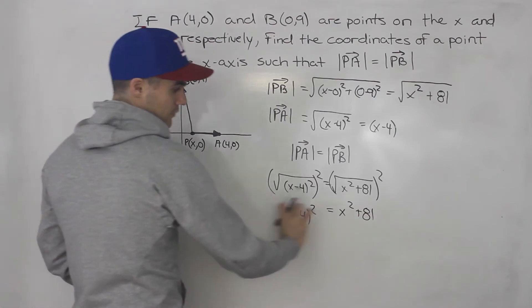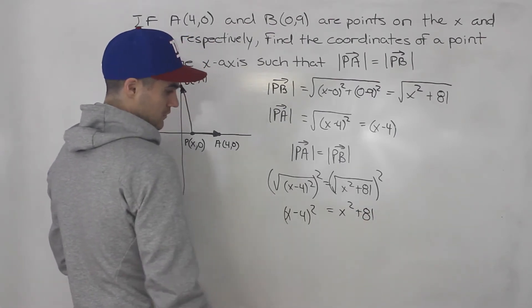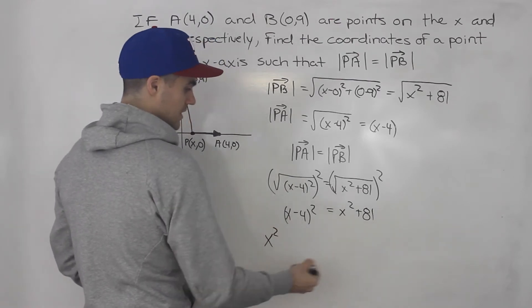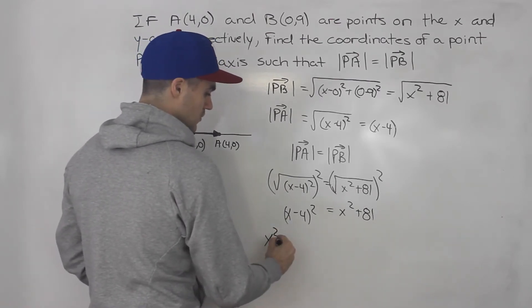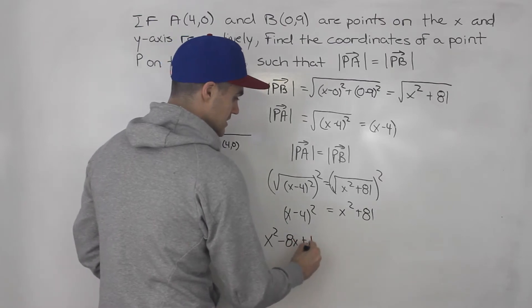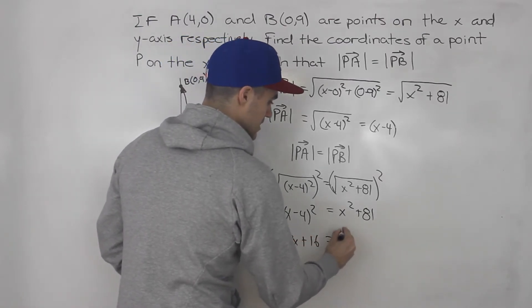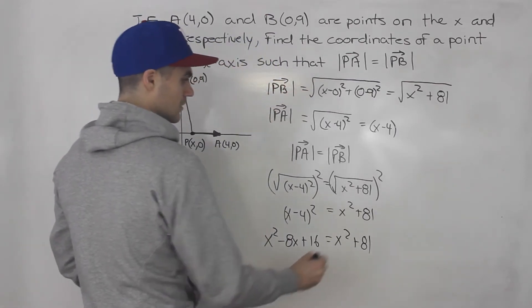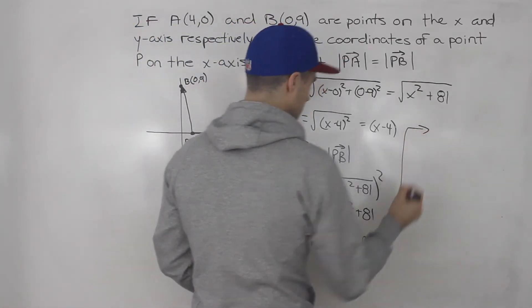Now notice we just have an equation here that we have to solve. So we can expand this. If we foil this out (x - 4)(x - 4), we'll end up with x² - 8x + 16 = x² + 81.